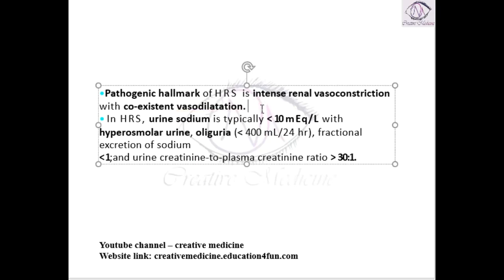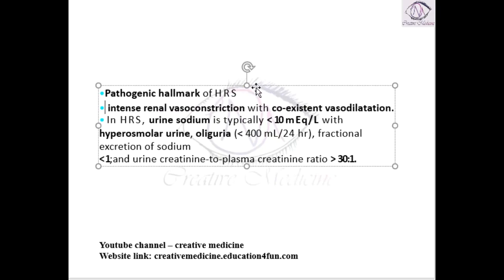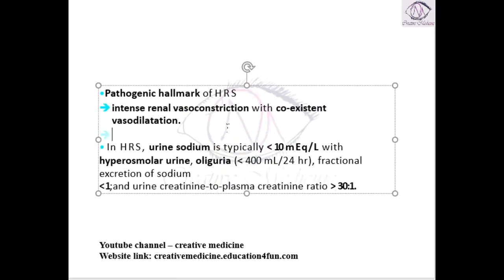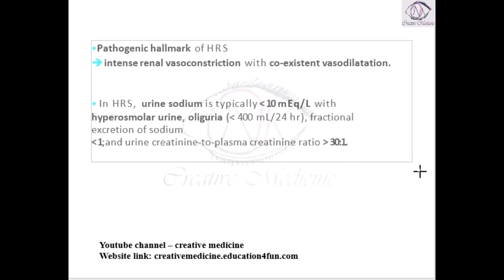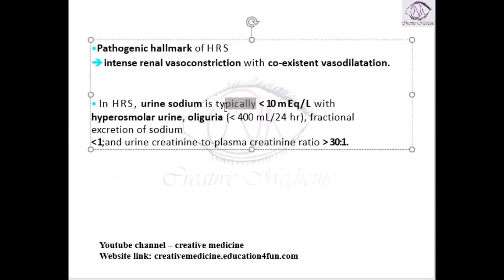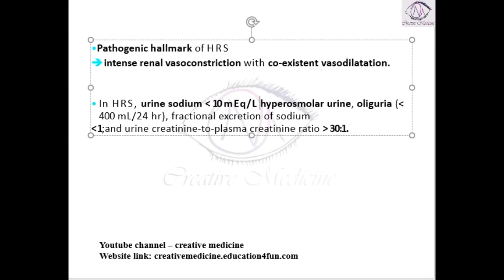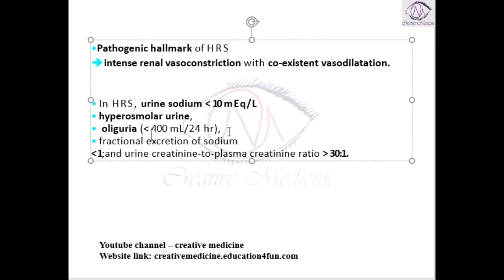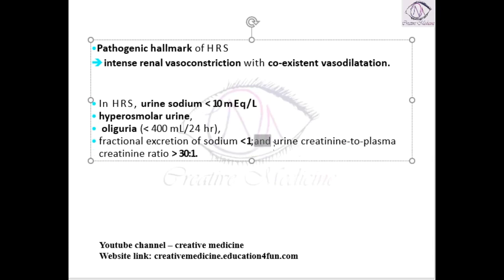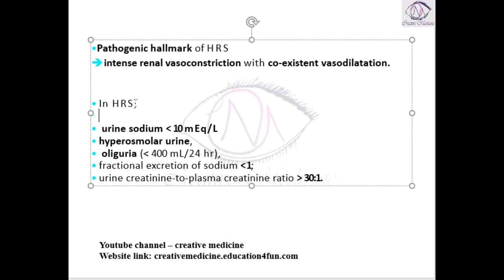In hepatorenal syndrome there is intense renal vasoconstriction with co-existent vasodilatation. Because of decreased GFR, urine sodium is very less — less than 10 mEq per litre — with hyperosmolar urine. There is oliguria, that is urine output less than 400 ml per 24 hours. Fractional excretion of sodium is less than 1, and urine creatinine to plasma creatinine ratio is more than 30 to 1.